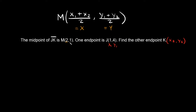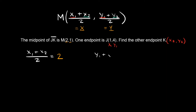We know the midpoint x is 2 and y is 1, and we know x1 is 1 and y1 is 4. So we set up two equations. First: x1 plus x2 divided by 2 equals 2. Second: y1 plus y2 divided by 2 equals 1. Plugging in x1 = 1 and y1 = 4. To solve for x2, multiply both sides by 2: 1 plus x2 equals 4. Subtract 1 from both sides: x2 equals 3.